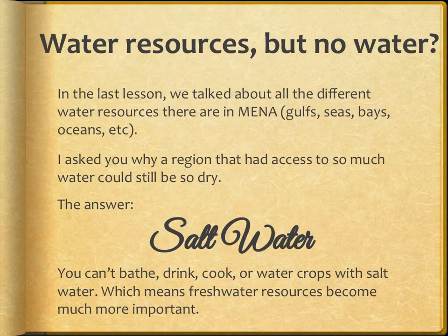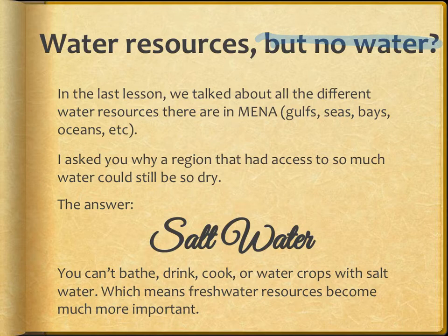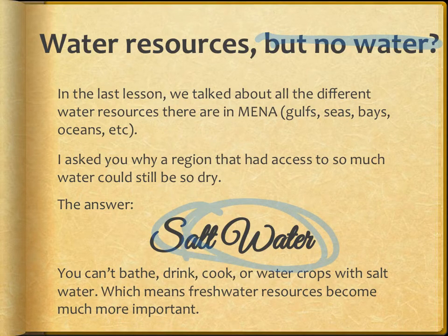In our last presentation we talked about all the different water resources, but how can you have all of these gulfs, seas, bays, and oceans and still be so dry? The answer is salt water. All of that is salt water. You can't bathe, drink, cook, or water crops with salt water, which means freshwater resources become much more important.